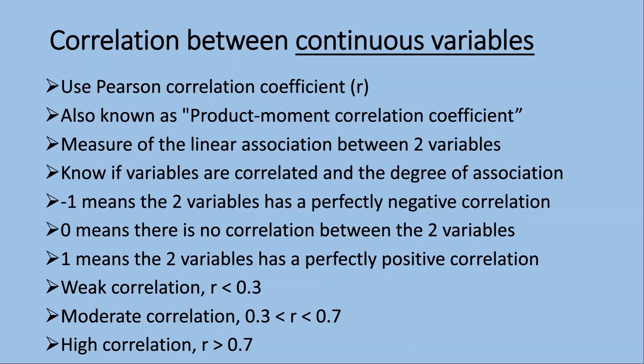If the coefficient is less than 0.3, we can say that there's a weak correlation. If the coefficient is between 0.3 and 0.7, there's a moderate correlation. If the coefficient is more than 0.7, that means there's a high correlation. And this goes for both positive and negative correlations.